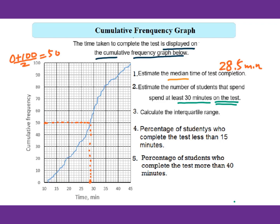Then estimate the number of students that spend at least 30 minutes on the test. At least 30 minutes. So I need to figure out 30 minutes here. I will draw a vertical line to intersect the graph, then draw a horizontal line to figure out the cumulative frequency. The number is 60. But 60 students, they will spend less than 30 minutes on the test. At least 30 minutes, that means 100 subtract 60, that's 40 students. They spend at least 30 minutes. So the answer will be 40.